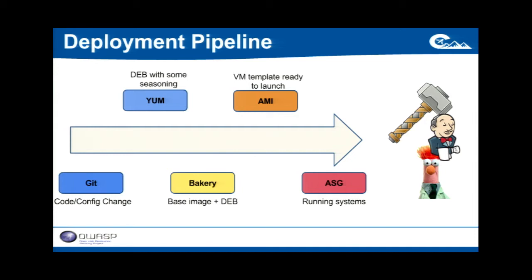Once those images are created, we'll use additional tools like Asgard to go ahead and deploy those to the different regions. Inside AWS there are things called auto-scaling groups or ASGs, and each instance within ASGs is created off of this base image. In this way, we leverage existing systems and tools we've built to create this chain from code to running system that's largely hands-off from the developer. Once configured, this happens continuously and the process is very repeatable and reliable, allowing us to manage our systems across many different regions and environments.